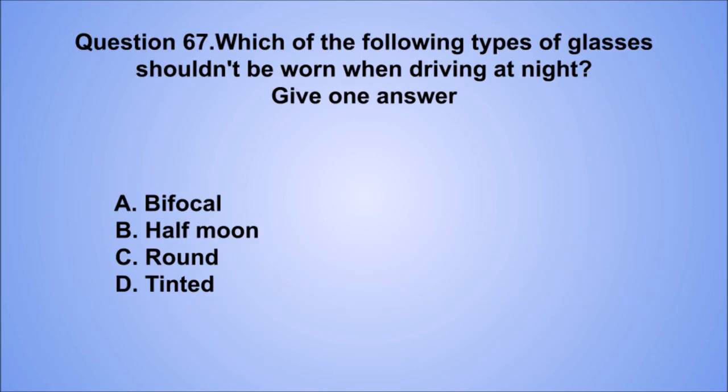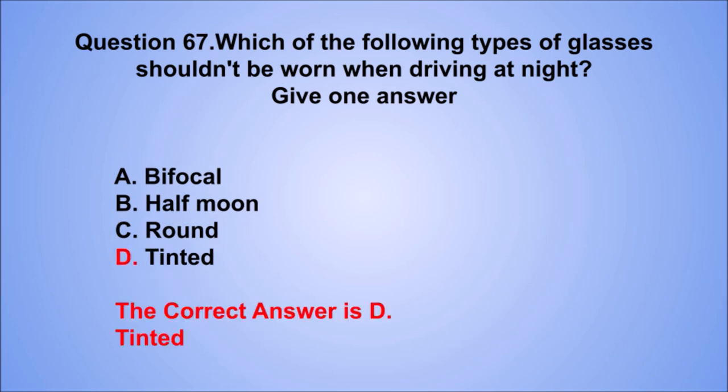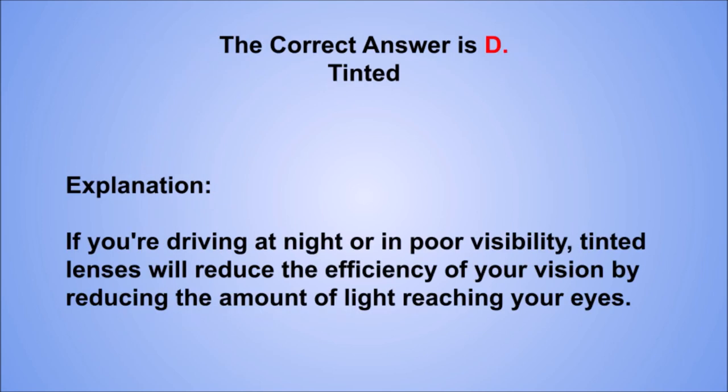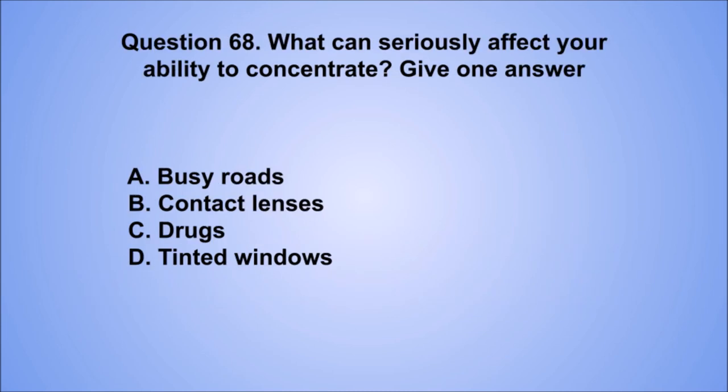Question 67. Which of the following types of glasses shouldn't be worn when driving at night? Give one answer. A. Bifocal. B. Half moon. C. Round. D. Tinted. The correct answer is D, tinted. If you're driving at night or in poor visibility, tinted lenses will reduce the efficiency of your vision by reducing the amount of light reaching your eyes.